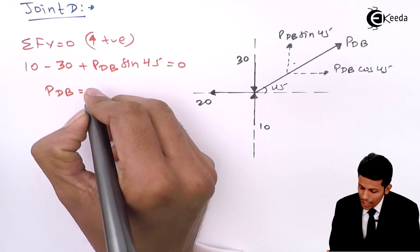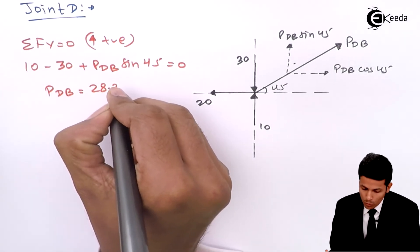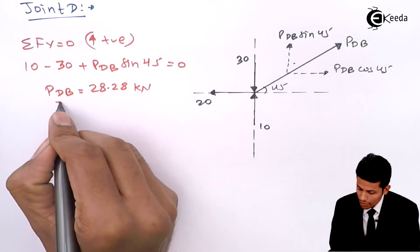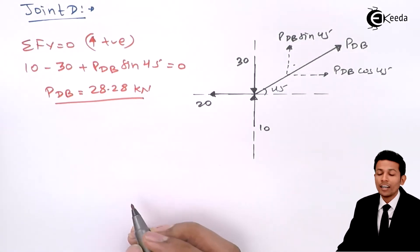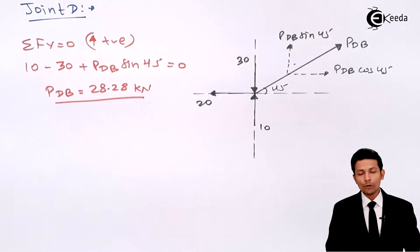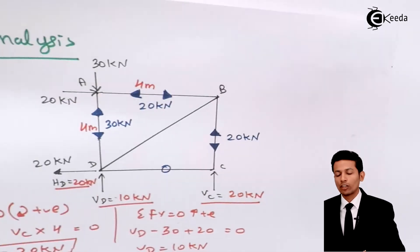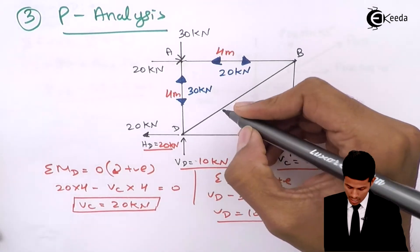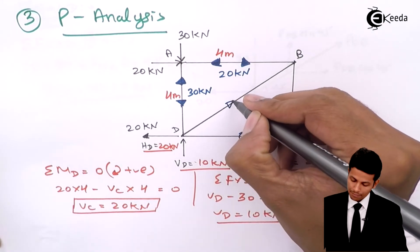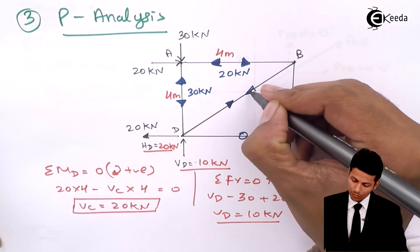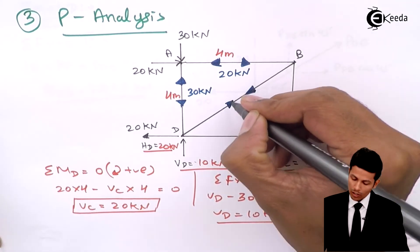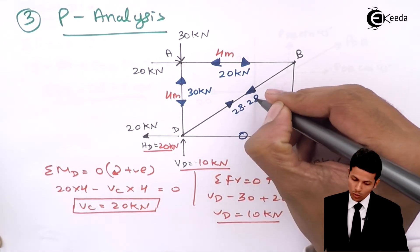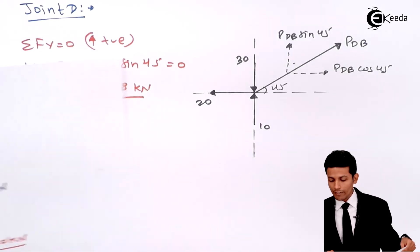Solving, we get P_DB equal to 28.28 kN, and it is positive, meaning it is in tension. Tension means two arrows kissing each other, so we draw accordingly. The P-analysis is now complete.